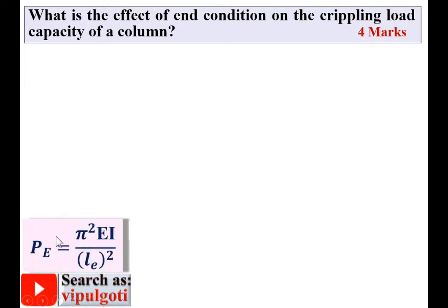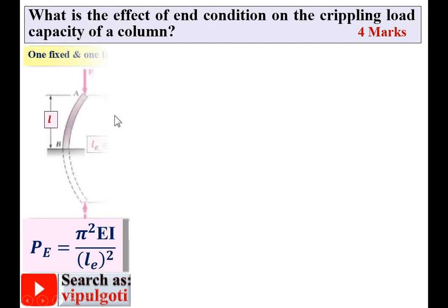As we have discussed earlier, Pe — that means Euler's crippling load — is equal to pi squared EI upon LE squared, where LE is the effective length. Let's understand the value of the effective length for different cases, or different end conditions of the column.